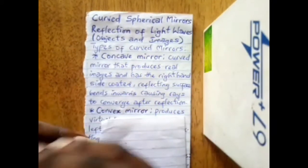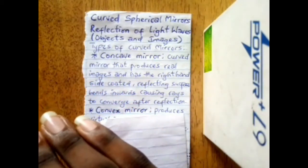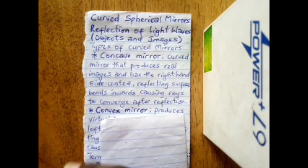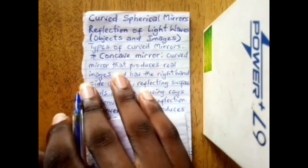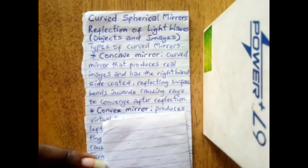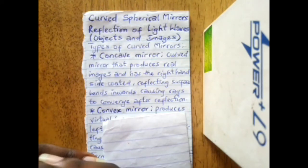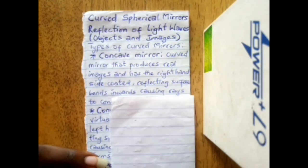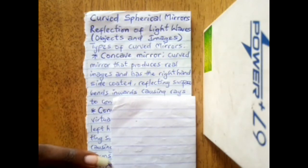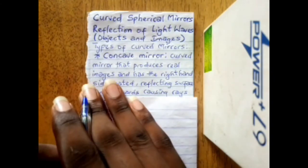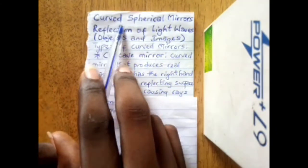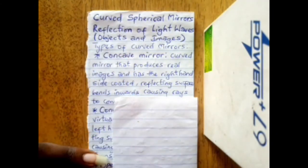In last class we talked about reflection on plane surfaces. I explained that reflection occurs in mirrors while refraction occurs in lenses. Today we're talking about reflection in mirrors, specifically curved spherical mirrors.